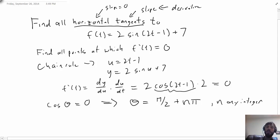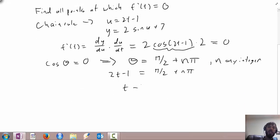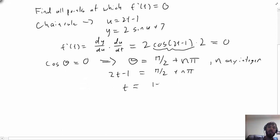If you know the angles at which cosine is zero, well then we just need to figure out what times correspond to those angles. Solving for t in this instance gives t is (1 + π/2 + nπ)/2.